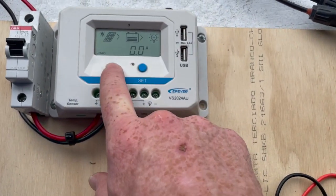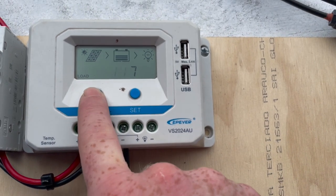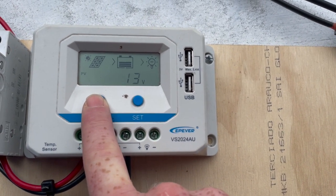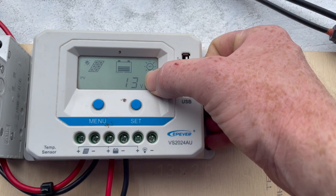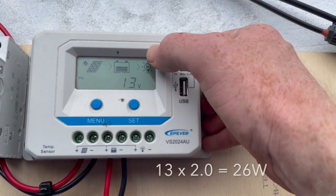Whereas a PWM, on the other hand, all it can do is draw the panel's voltage down to what it needs to charge the battery at. So it's charging the battery at 13 volts.